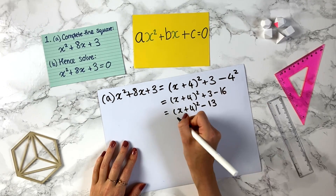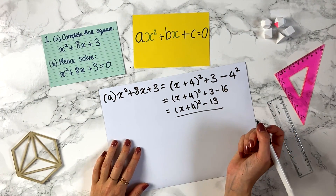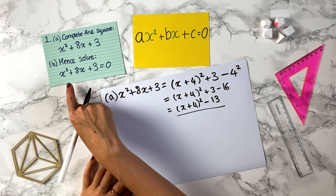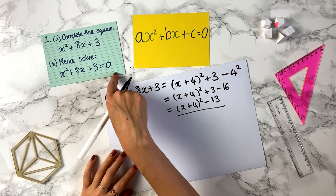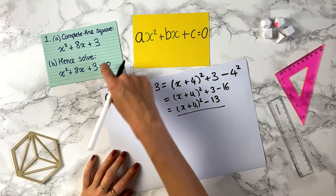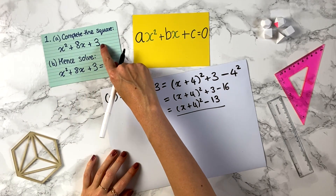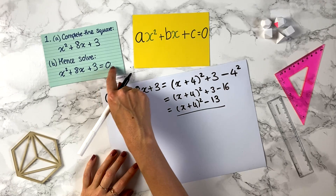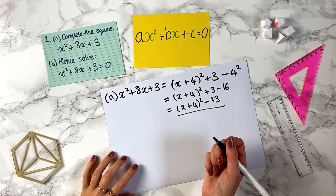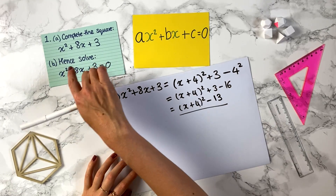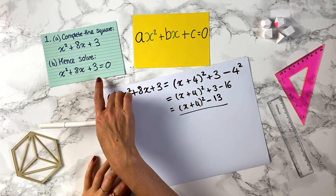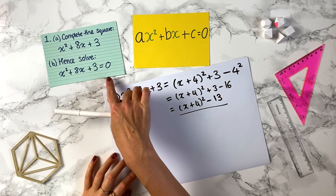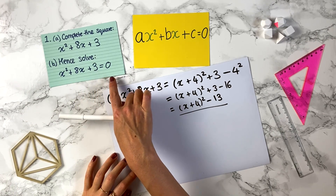So that equals x plus 4 squared minus 13. That's our answer for part a. Now we've got part b where we want to solve a quadratic equation. That was a quadratic expression because there's no equal sign. Now it's an equation because we've got an equals to 0.